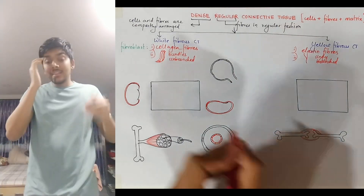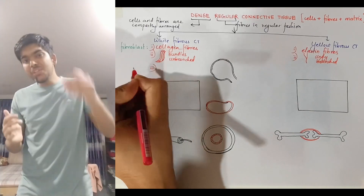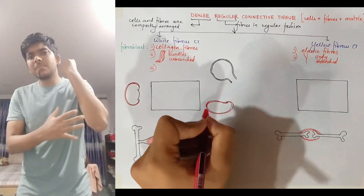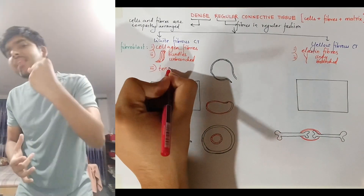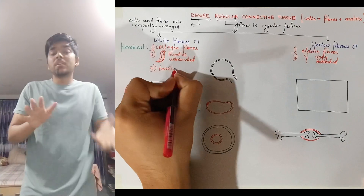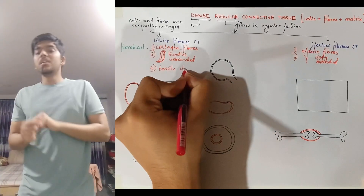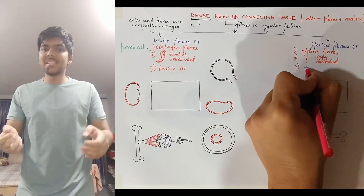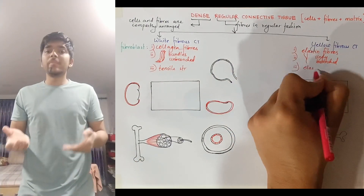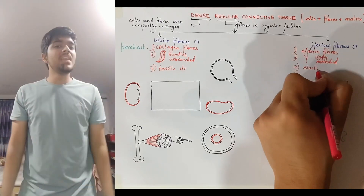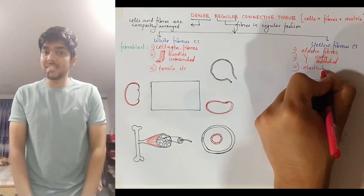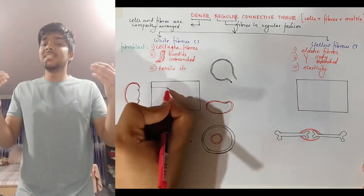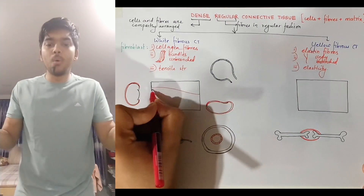Since white fibrous connective tissue is found in bundles, it provides tensile strength. On the other hand, yellow fibrous connective tissue provides elasticity because it is made up of the protein elastin — the name itself tells us it is related to the property of elasticity.